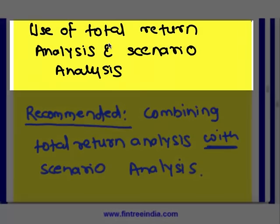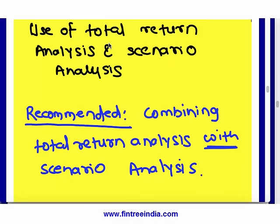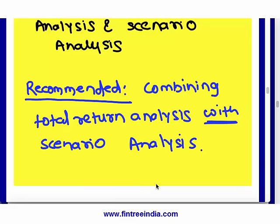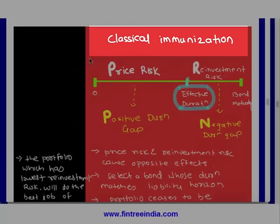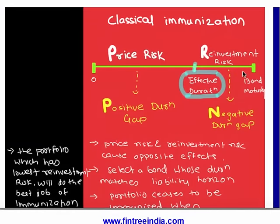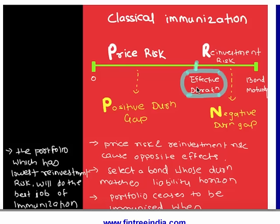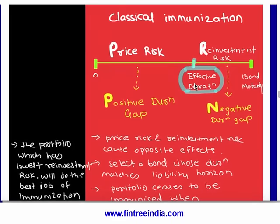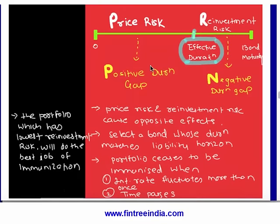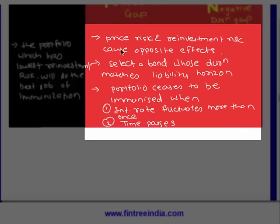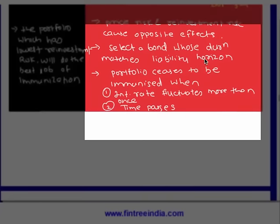Total return analysis uses the term 'horizon yield.' It is recommended to combine total return with scenarios. For classical immunization: if the effective duration of your portfolio matches the maturity of the liability, you have achieved classical immunization. If the holding period is less than the duration, you are exposed to price risk; if more, you are exposed to reinvestment risk. These sections are called positive duration gap and negative duration gap respectively. Price risk and reinvestment risk work in opposite directions.